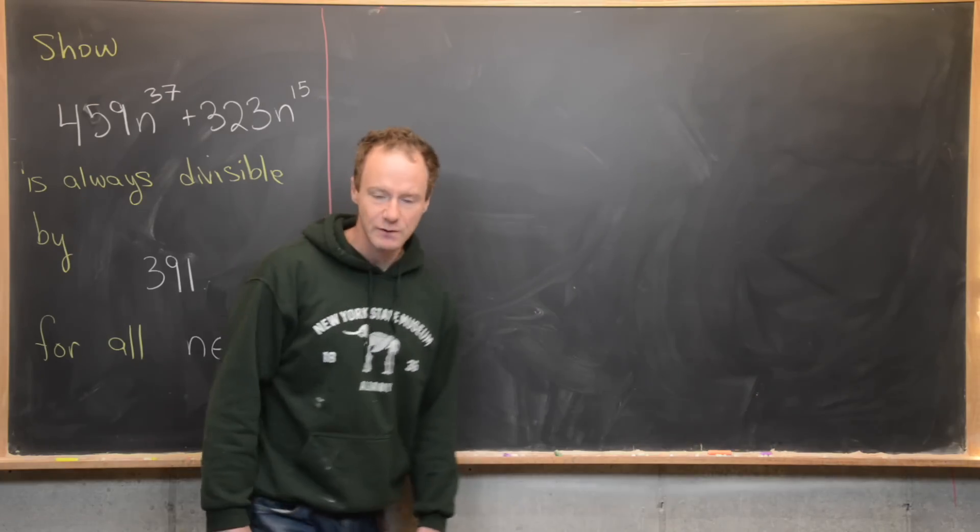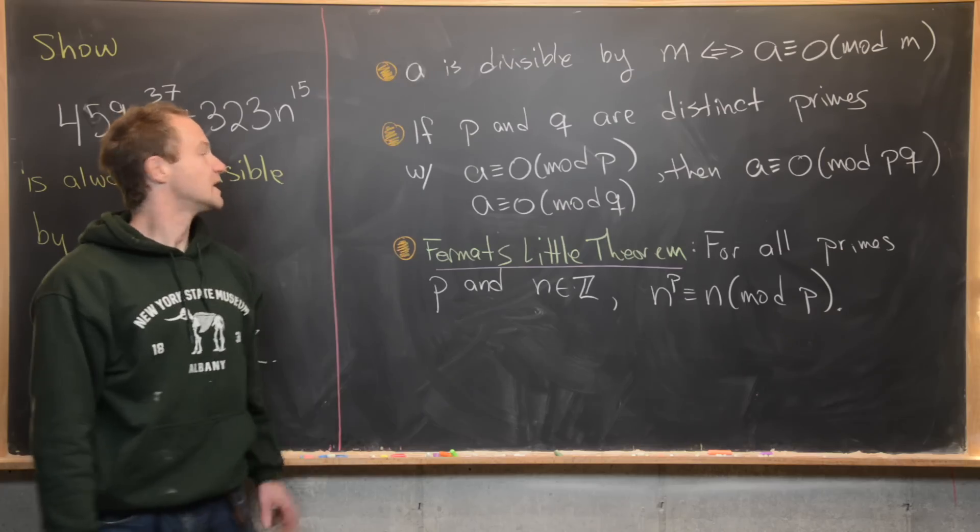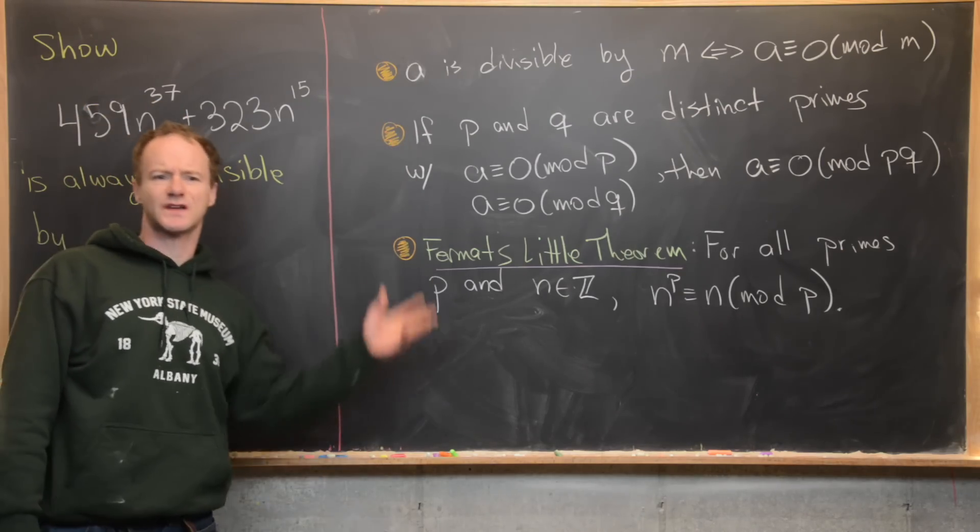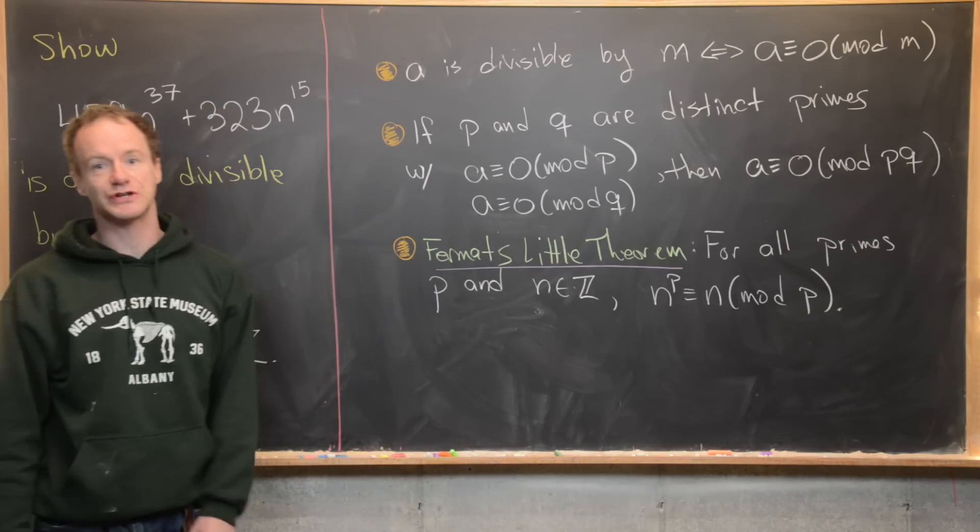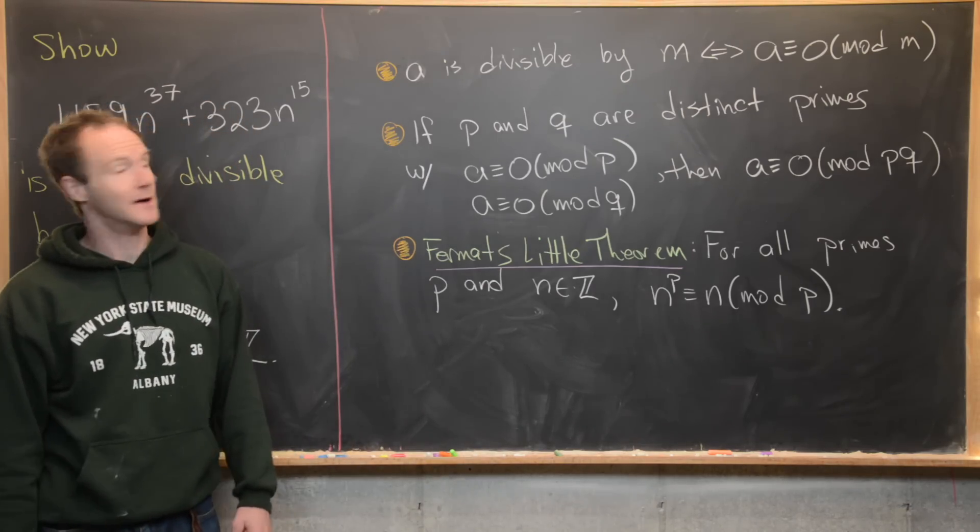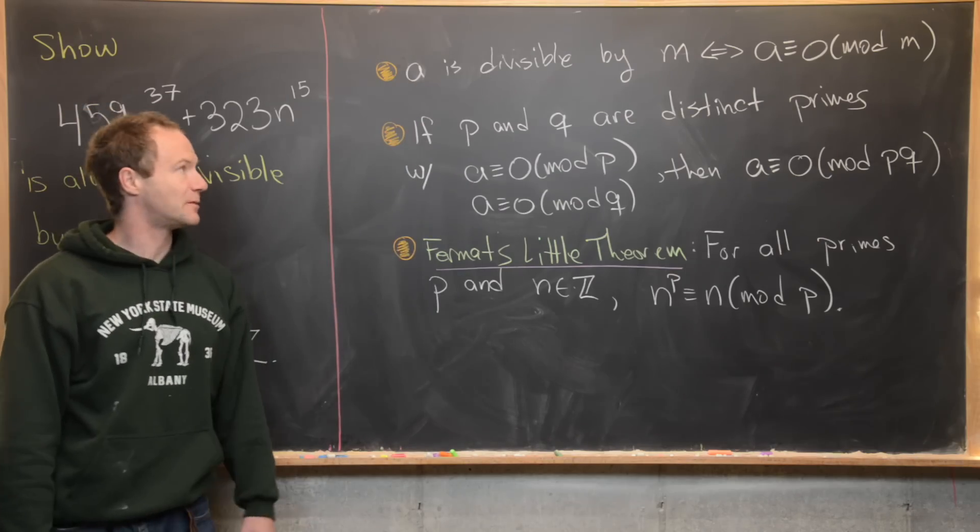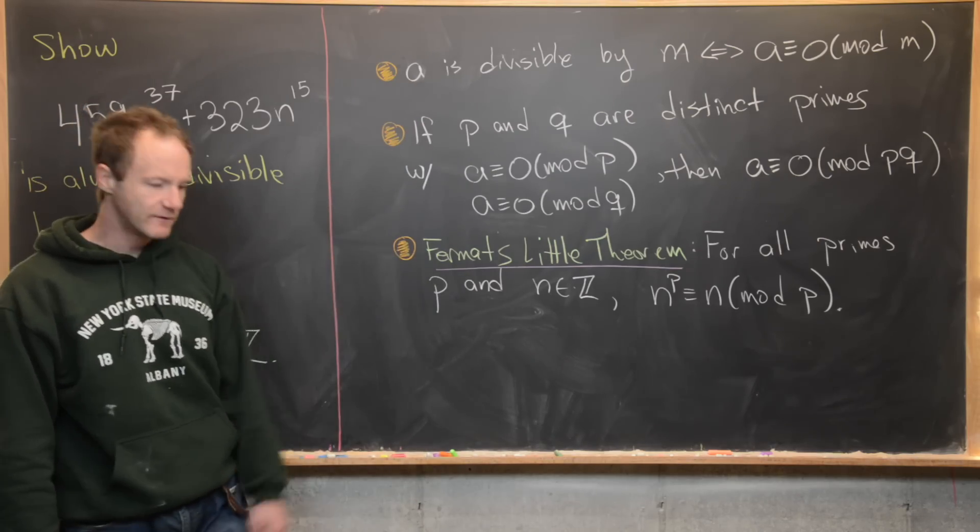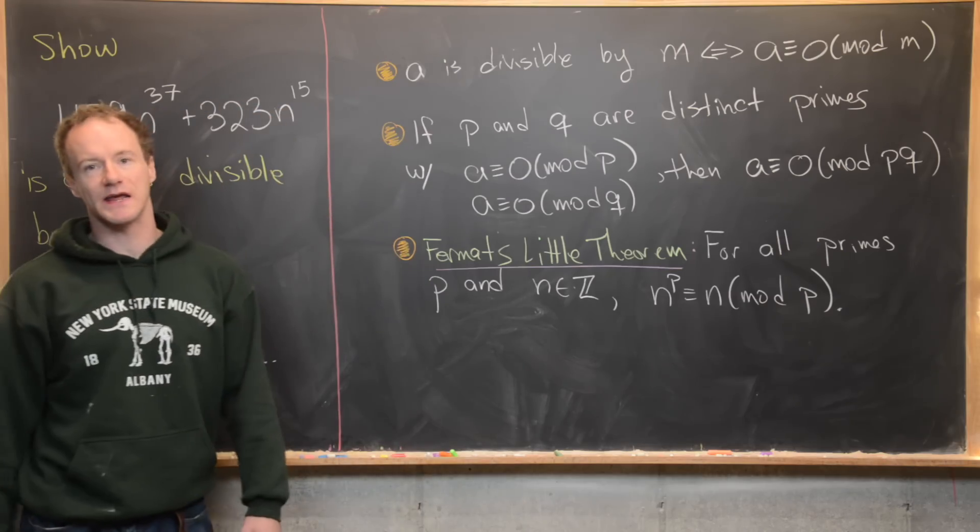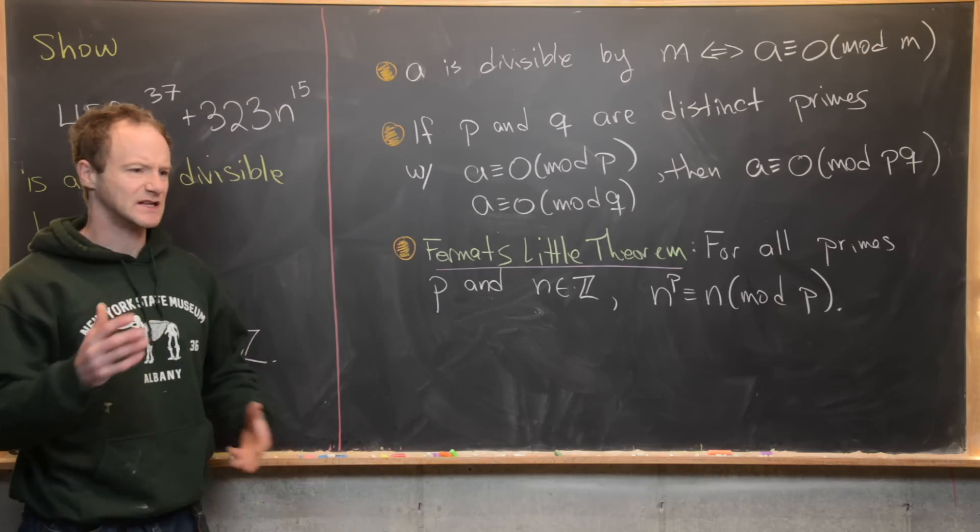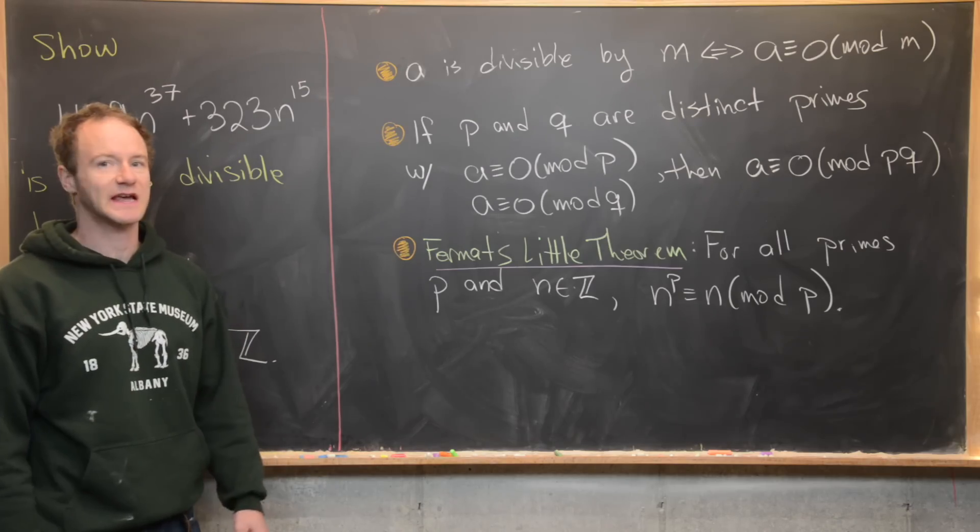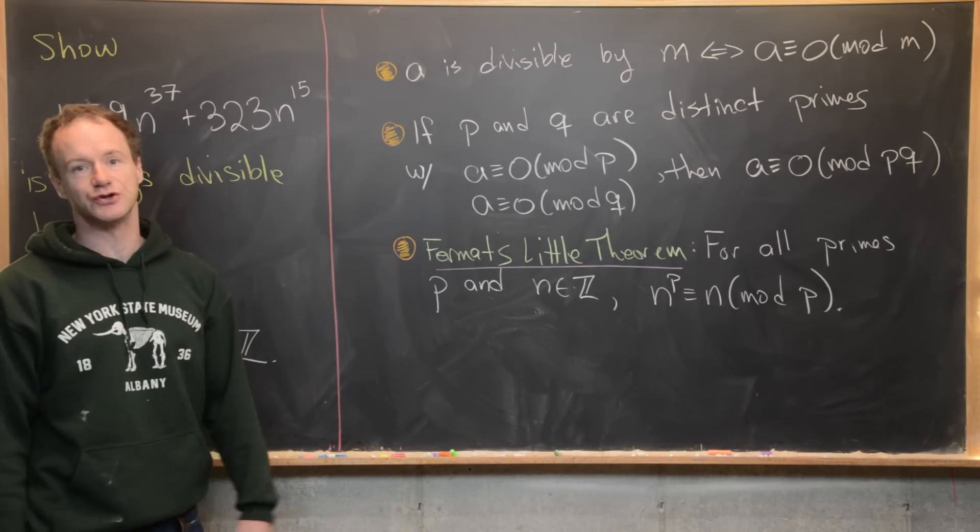Let's see what tools we're going to use. These are the three main tools. One is just a reimagining of the notion of divisibility via the notion of congruence modulo m. So a is divisible by m could be equivalently stated as a is congruent to zero mod m. That really just allows us to rephrase this in the language of modular arithmetic and use things like our next two tools.